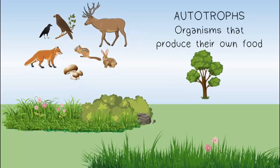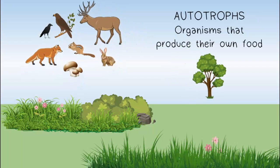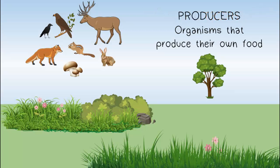Some organisms are classified as autotrophs. They are self-feeding and are able to produce their own food. The tree, the grass, the bushes, and the flowers are all classified as autotrophs. We can also refer to them as producers. Producers use light energy from the sun through the process of photosynthesis to produce their own chemical energy.